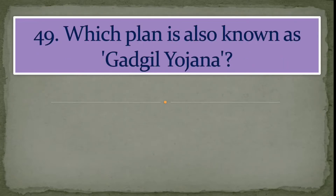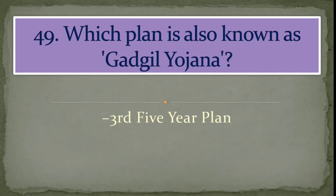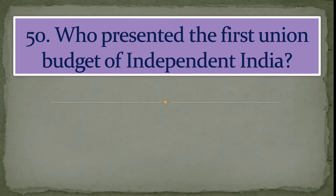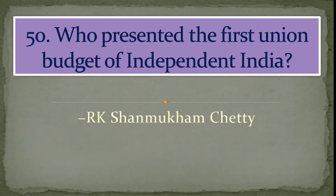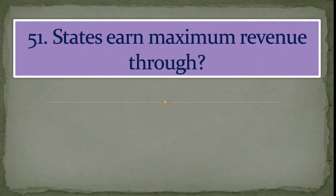Question number 49: Which plan is also known as Gadgil Yojana? Answer: the Third Five-Year Plan. Question number 50: Who presented the first union budget of independent India? Answer: R.K. Shanmukham Chetty.